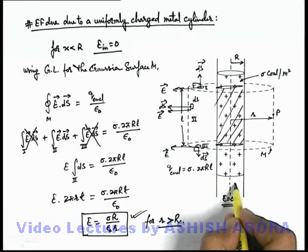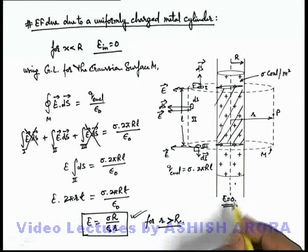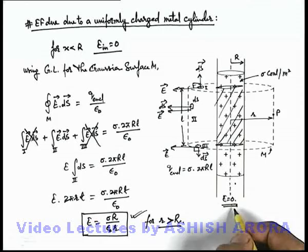For an interior point, we consider a Gaussian surface. As no enclosed charge is there, by Gauss law also we can say that net electric field at every interior point will be equal to zero.